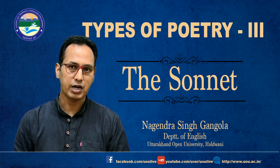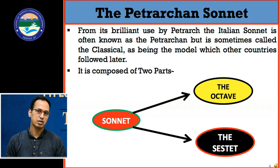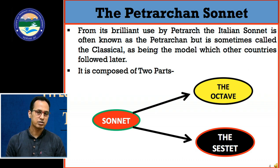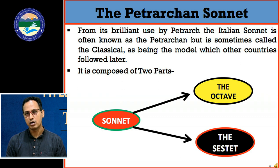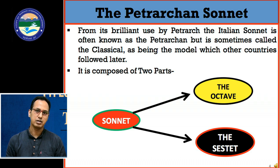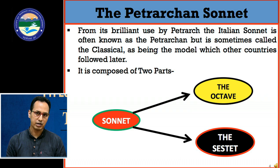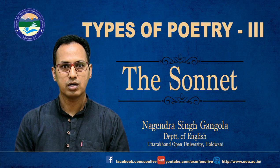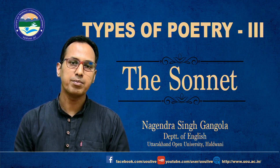In the Petrarchan sonnet, if we talk about the form and structure, there are two main sections. The first section is called the octave, which comprises eight lines. Then comes the sestet, which comprises six lines. In total, that makes 14 lines, which is the criterion for a poem to be a sonnet. I have drawn a figure meticulously so that nothing remains unexplained and nobody can be confused about this structure.